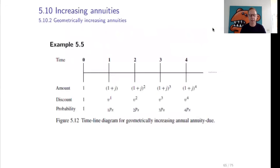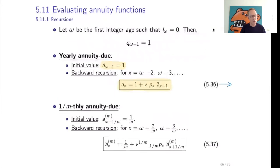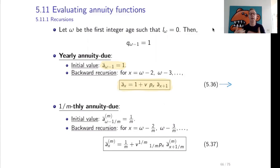Here is a timeline diagram for the geometrically increasing annuity. Now, how can we evaluate annuity functions? Let omega be the first integer age such that l_omega is 0 — that is, omega is the first age at which nobody is alive in the portfolio, meaning q_{omega minus 1} equals 1. We will set up a backward recursion to evaluate whole life annuities.